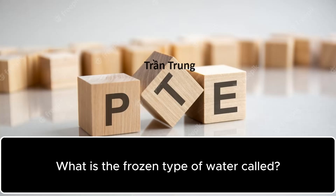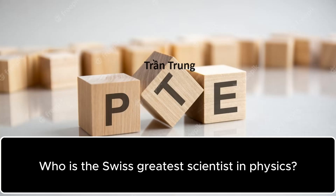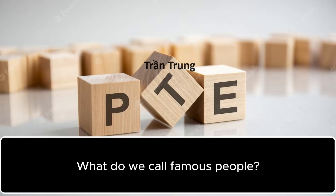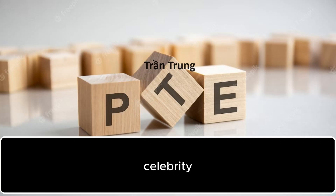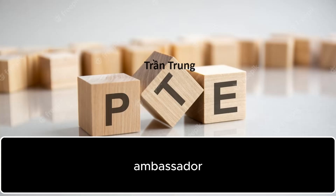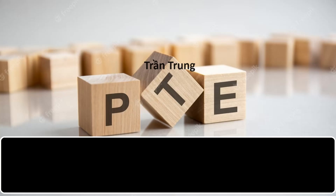What is the frozen type of water called? Ice. Who is the greatest scientist in physics associated with Switzerland? Einstein. What do we call famous people? Celebrity. What is the highest position in the embassy? Ambassador. What device is used to measure the height of mountains? Altimeter.